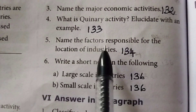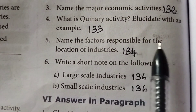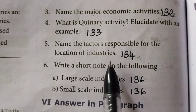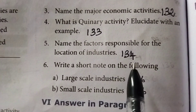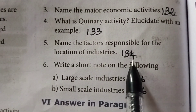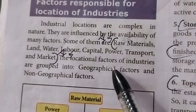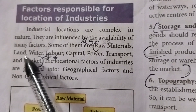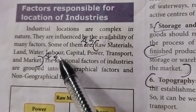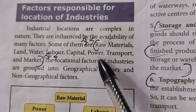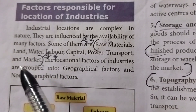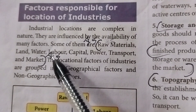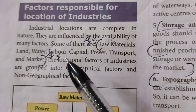Fifth question — name the factors responsible for the location of industries. Take page number 134. The factors are: raw materials, land, water, labour, capital, power, transport, and market.